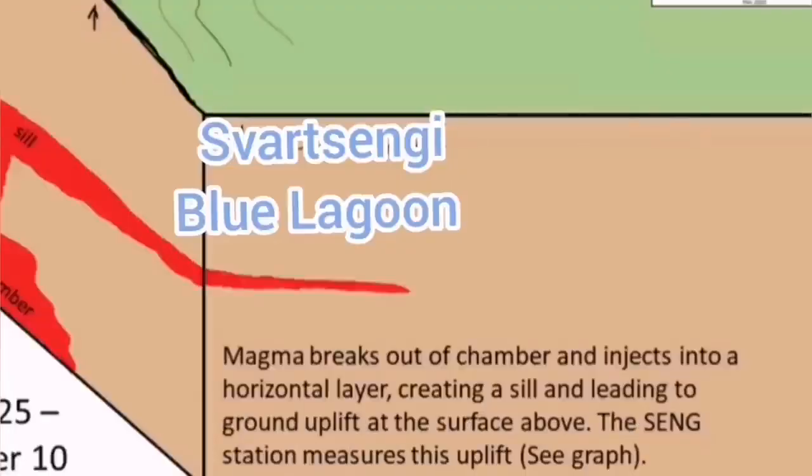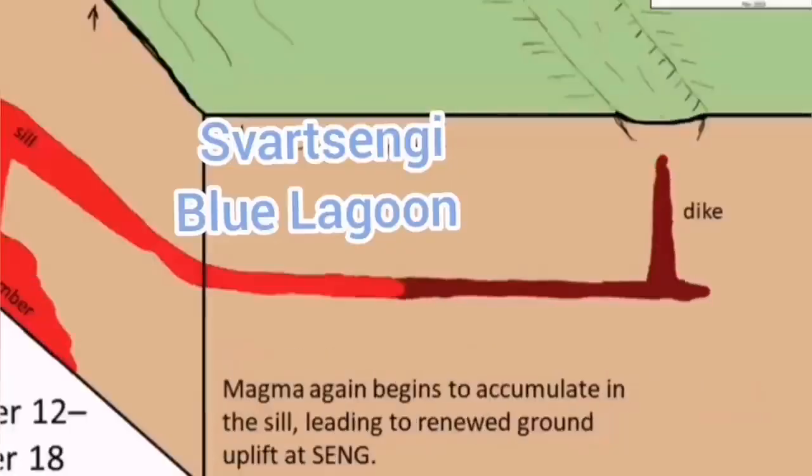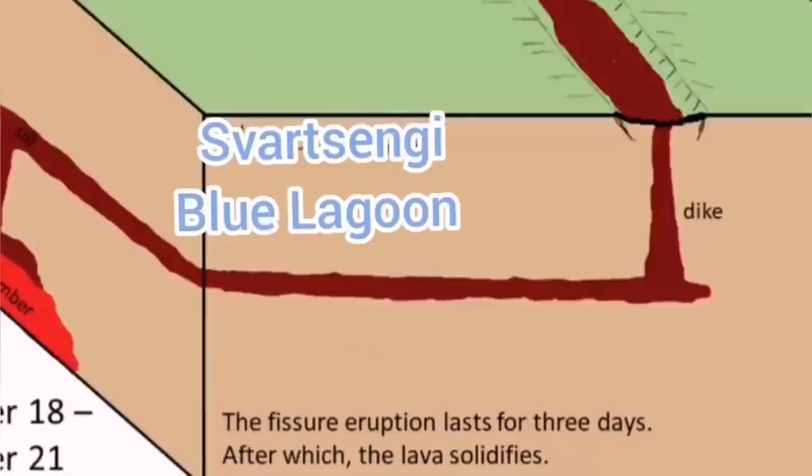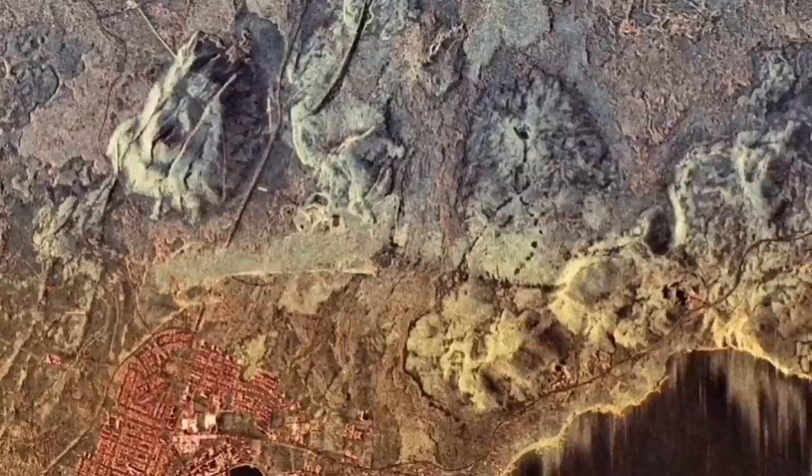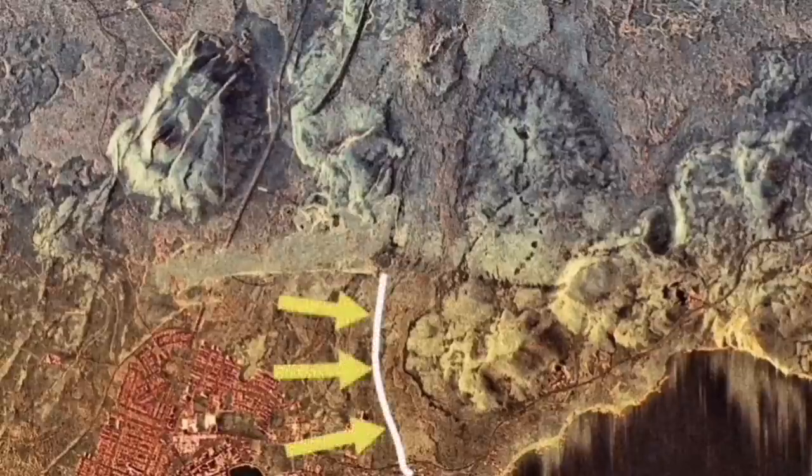I think the other one, there is a possibility it will be towards Grindavik. Based on what we see, the sill will lead to an eruption in that area at that angle, and there is a good chance that we may have also recurrence of what we saw in the January eruption around Grindavik.